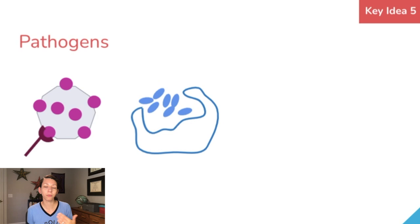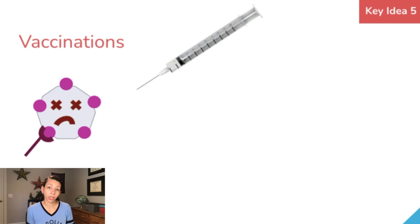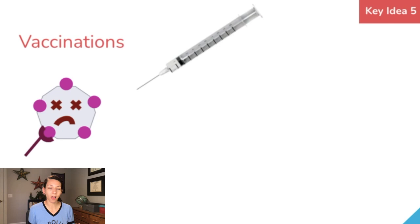That's how vaccines work. Vaccines use dead, weakened, or parts of microbes and introduce those to us so our bodies can recognize the surface markers associated with those pathogens. Once we know how to fight them off, the next time we're actually infected by a real version of that virus, our body will be able to fight it off easily because we already have the tools to destroy them.